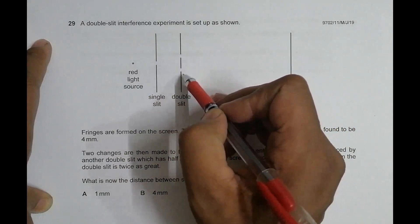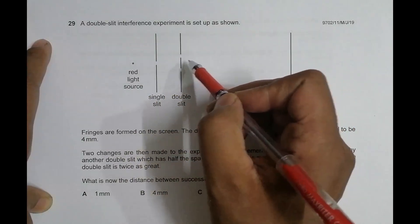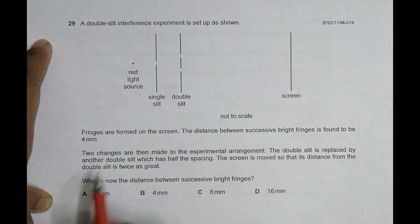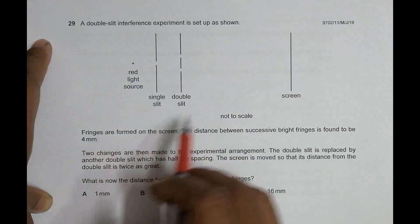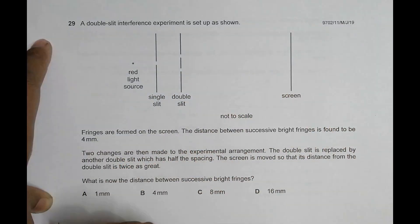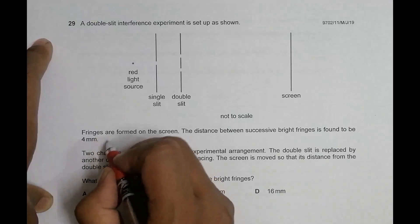Then there are two, or the double slit arrangement, which can act as coherent sources because they are obtained from the same source here. And we have a screen here. Fringes are formed on the screen. The distance between successive bright fringes is found to be 4 millimeters.